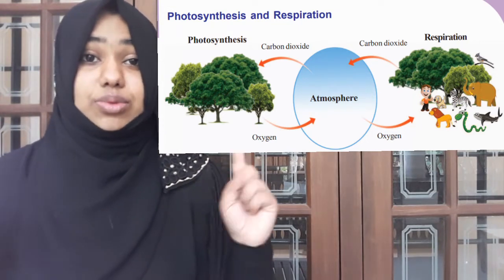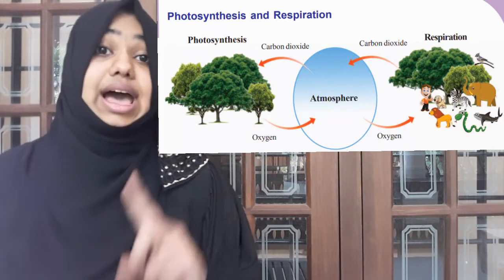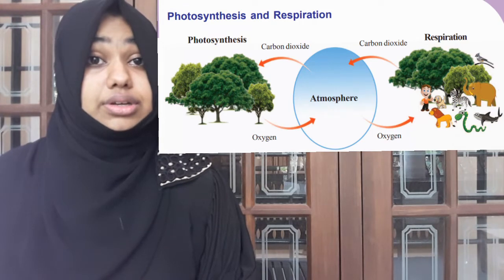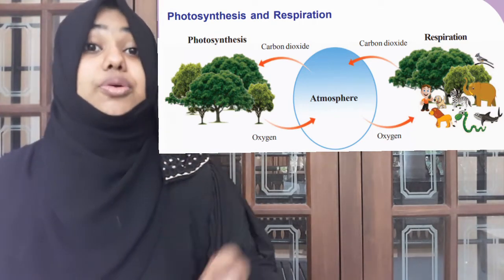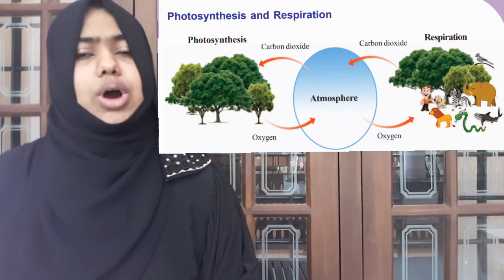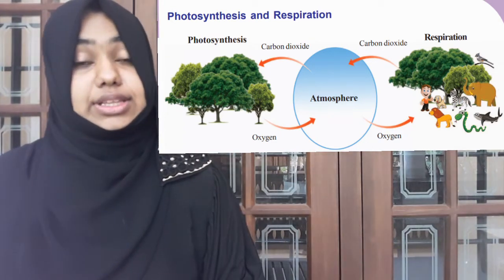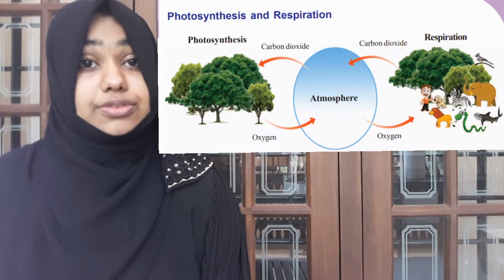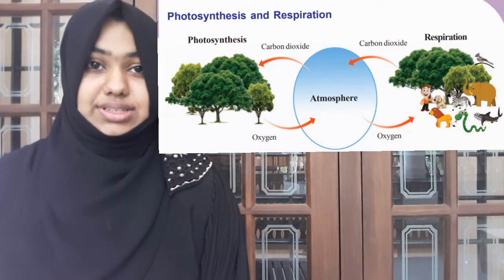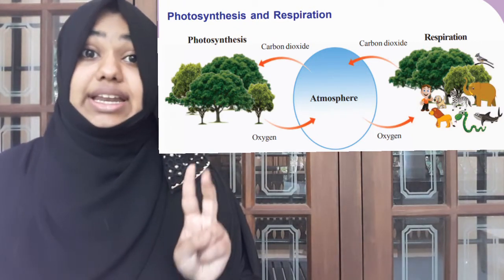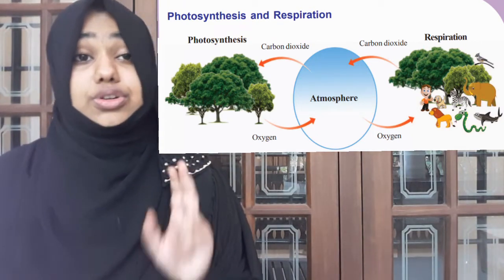Plants take in oxygen as well as carbon dioxide. Plants take oxygen for their respiration — for breathing, for their survival. The trees also take carbon dioxide for the process of photosynthesis. There is a difference: they take oxygen for respiration and carbon dioxide for photosynthesis.